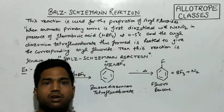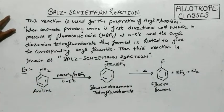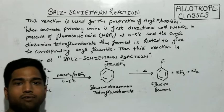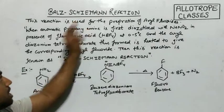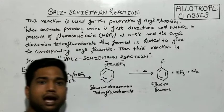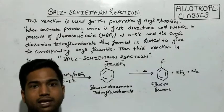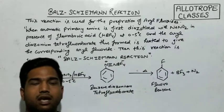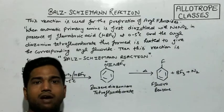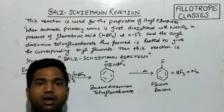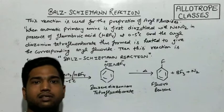This reaction is basically used for the preparation of aryl fluorides. Similar to alkyl fluoride formation, aryl fluorides can be formed, but direct formation from a fluoride compound to hydrocarbon is not used because the reaction is very violent and control is not possible. So specific conditions and specific reactions are needed for alkyl halides and alkyl fluorides.